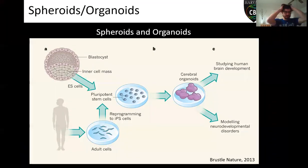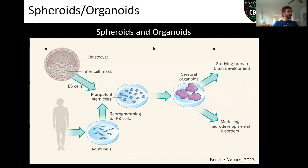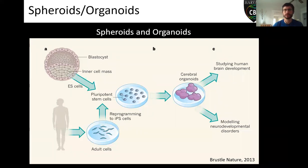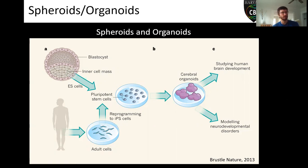I am by no means an expert in spheroids and organoids — that is all of you. I just image them a lot. I stole this slide from a Nature review, I think from the Arlotta lab. Most of you know this far better than I do, but basically spheroids and organoids are 3D culture models. You can start from some type of stem cell and begin to differentiate it into whatever tissue you're interested in. These start to grow in little clumps inside your dish or inside a roller, and they can be differentiated into different types of tissue. They come in many different shapes and sizes.